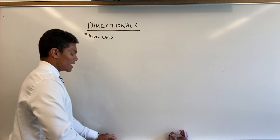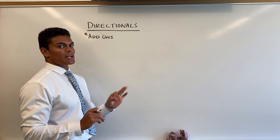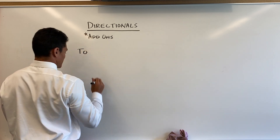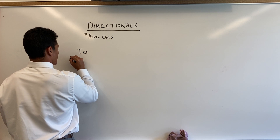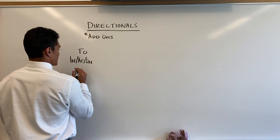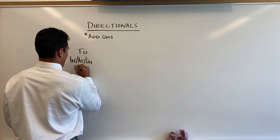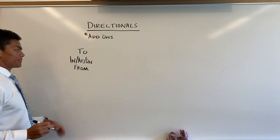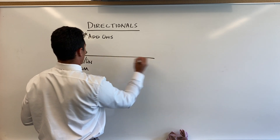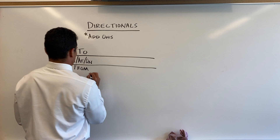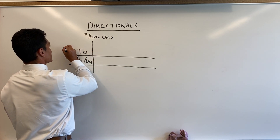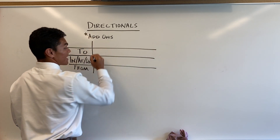So there are three main directionals we're going to focus on right now. The first one is 'to.' The second one is a combo — it's 'in,' 'at,' and 'on.' And then we have 'from.' I'm going to split these up into a little table here, and I think it'll help us all understand. We're going to focus on 'to' first, and then we'll go from there.